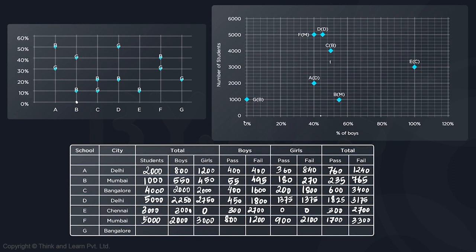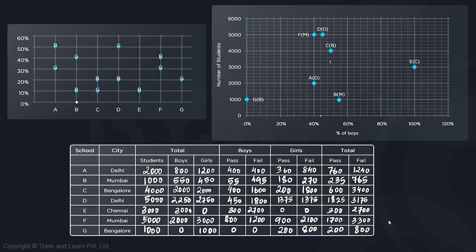School G is from Bangalore with 1000 students, and it's an all-girls school — 0% boys. From the second scatter diagram, 20% of girls passed, so 200 girls passed and 800 failed. Total passed: 200, total failed: 800. Once this table is completed, all the questions will be easy to solve.